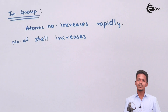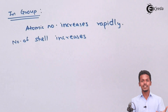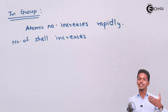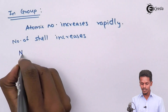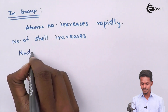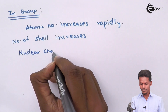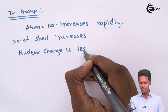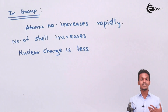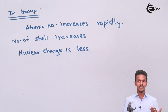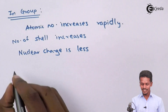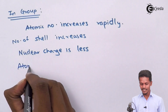Because the number of shells increases, the effective nuclear charge will be less. So the nuclear charge decreases. Because of which, if the effective nuclear charge decreases, then the atomic size will increase. That's the reason the atomic size increases as we move down a group.